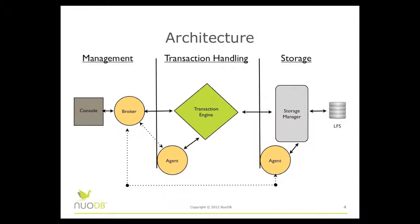This slide diagram shows you the simplest implementation for NuoDB: one broker, one transaction engine, and one storage manager. Each of these tiers could reside on a single server or each on different servers across data centers. Also, take note that each tier has at least one agent process, which is used to manage communication across each tier in the deployment.